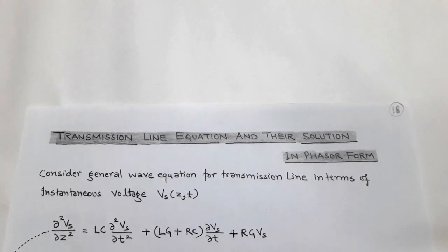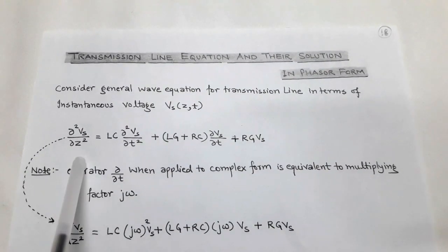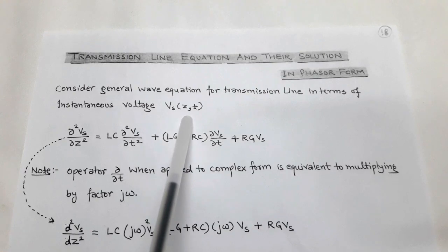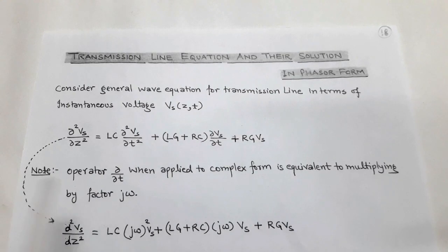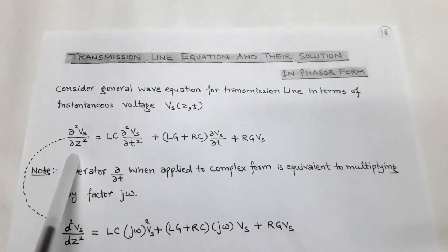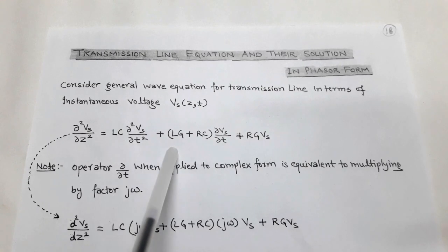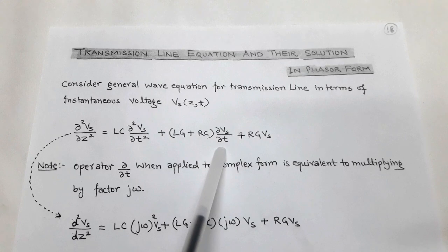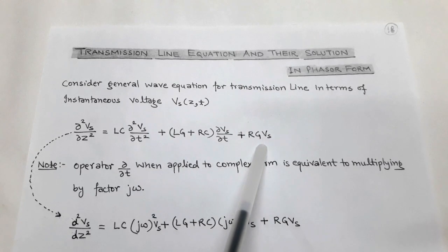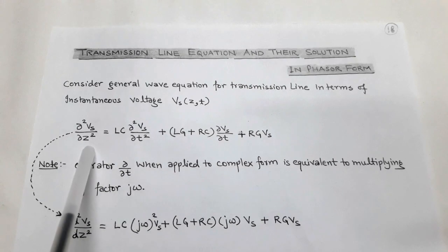The topic is transmission line equations and their solution in phasor form. The sinusoidal voltage is represented by a general wave equation for a transmission line, and its instantaneous voltage is given as V_s. From here we get a second order equation which is a general wave equation of voltage in sinusoidal form: d²V_s/dz² = LC·d²V_s/dt² + (Lg + RC)·dV_s/dt + RG·V_s. Here V_s is called the instantaneous voltage in sinusoidal form.